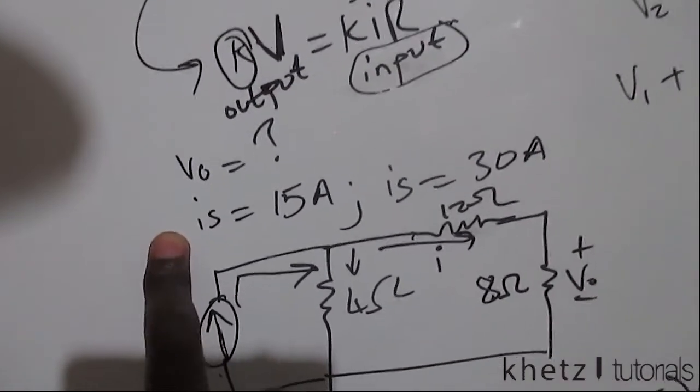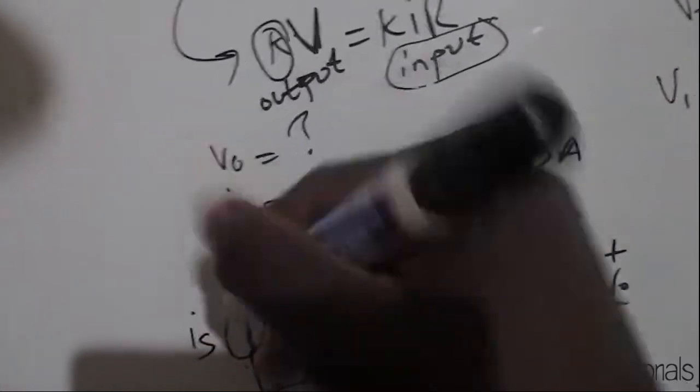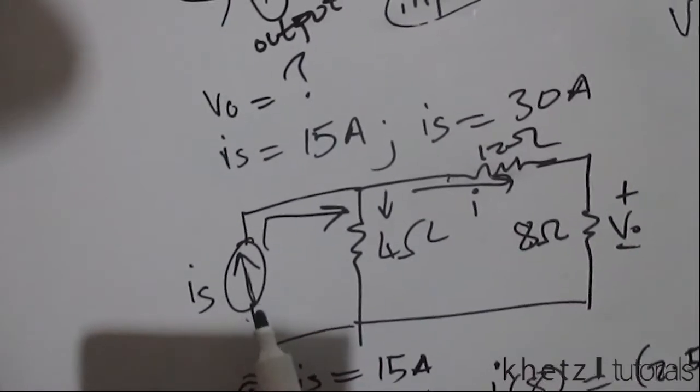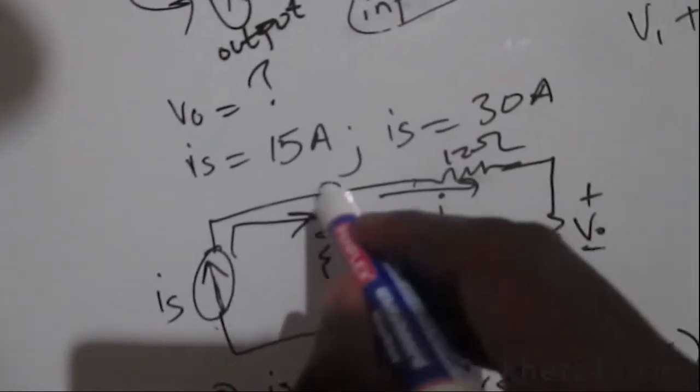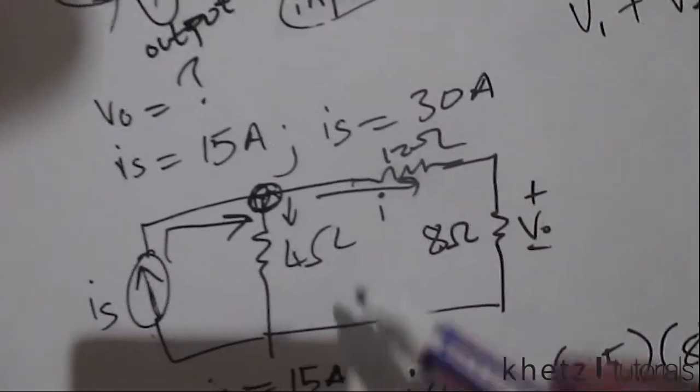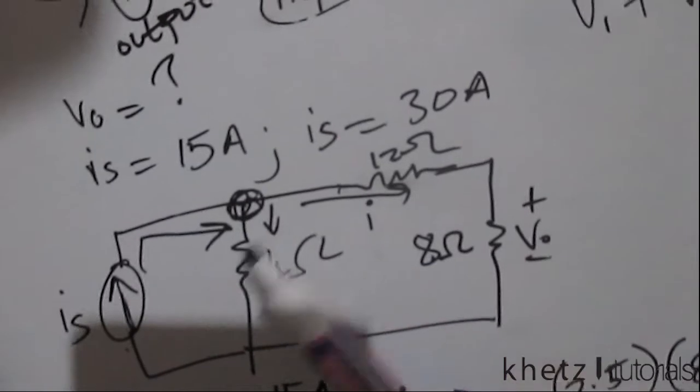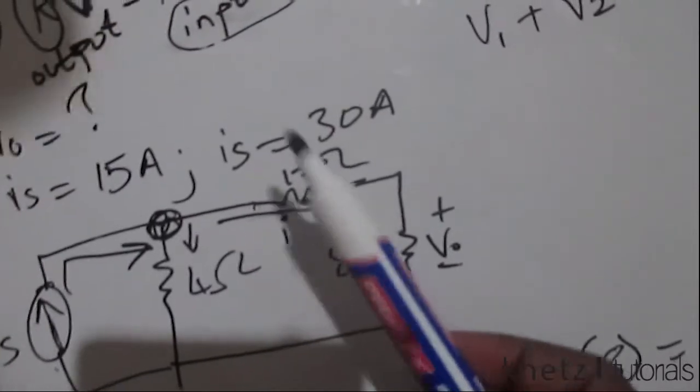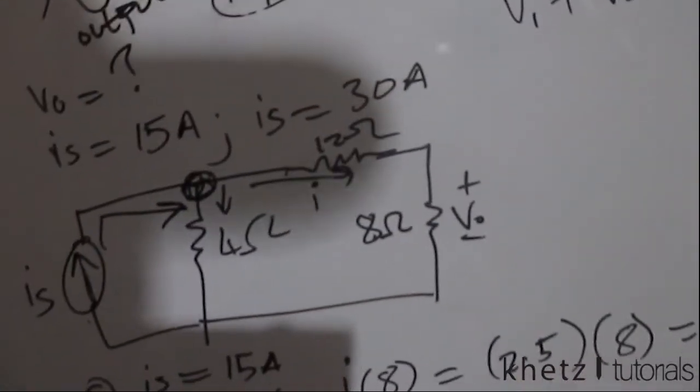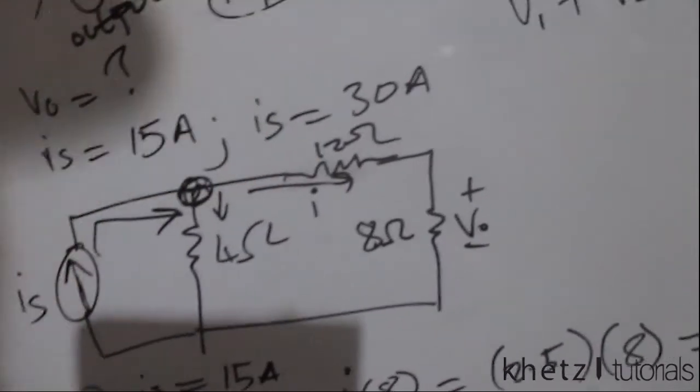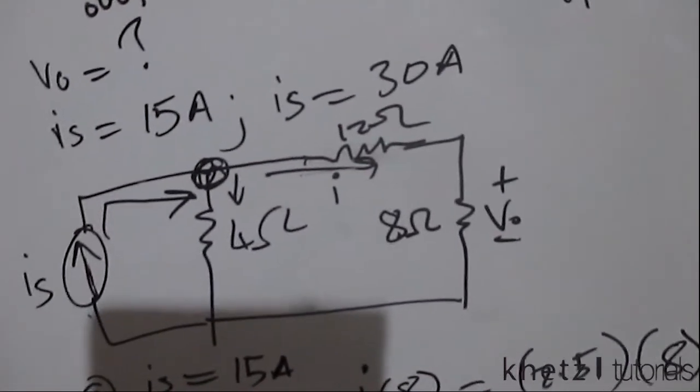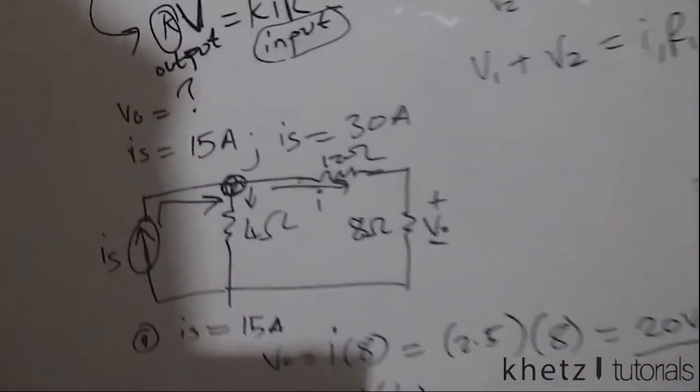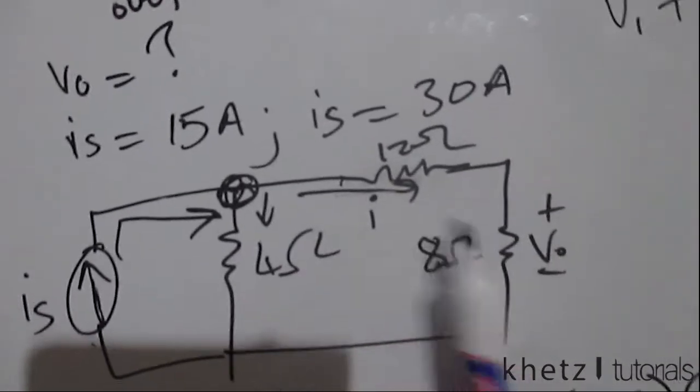So the first section asks find VO if IS is 15 amperes. What is going to happen here is we have this current source supplying current and at this junction, we're going to have two different currents splitting. One going there and another going there to the series connection of these two resistors. Since these two resistors are in series, then they share the same current. So I labeled that current I. After labeling that current I, I'm just going to use current division to find the current across that side.